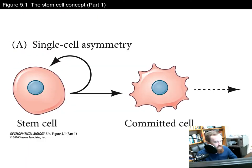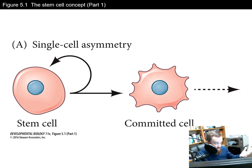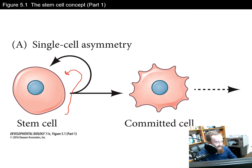One of the key aspects of stem cells is this notion that they can make more stem cells. Here we see that a stem cell is proliferating and making more stem cells, and these stem cells can also then commit and differentiate and become other types of tissues.